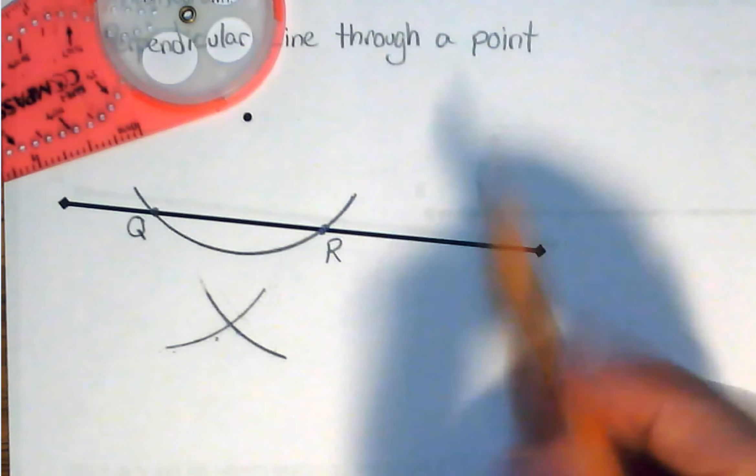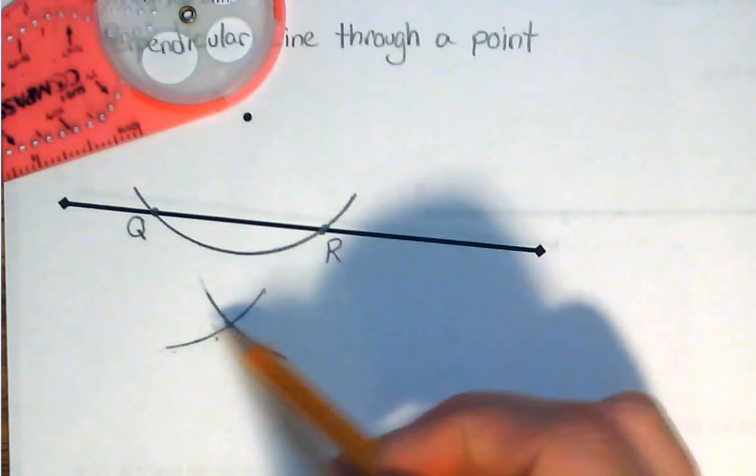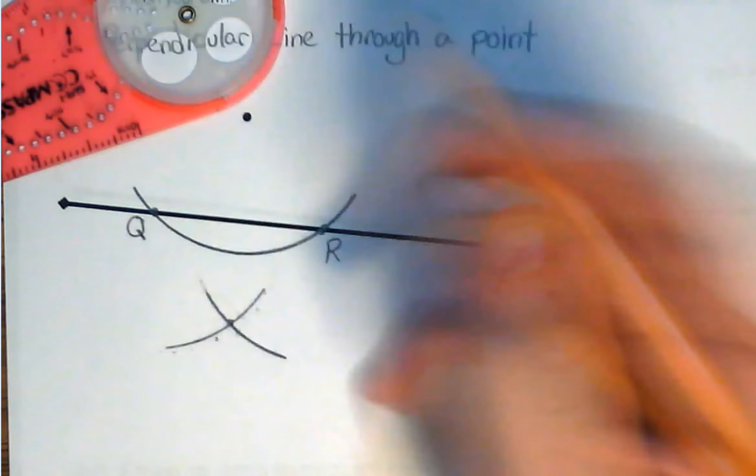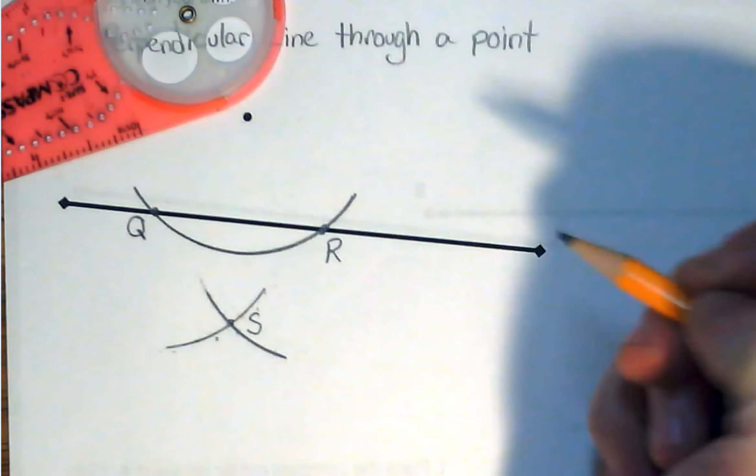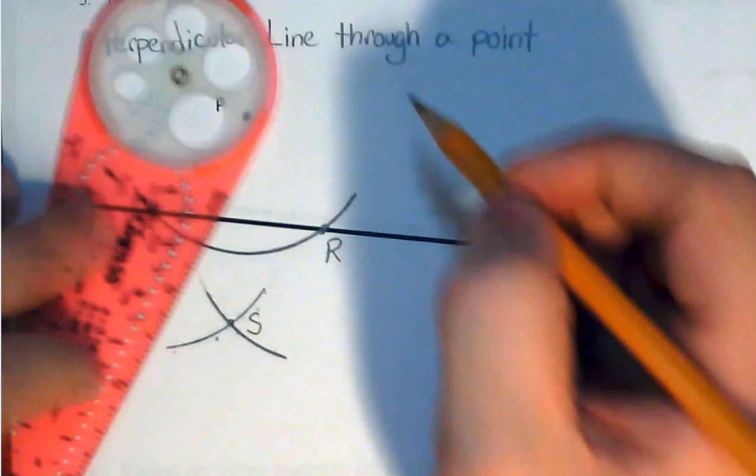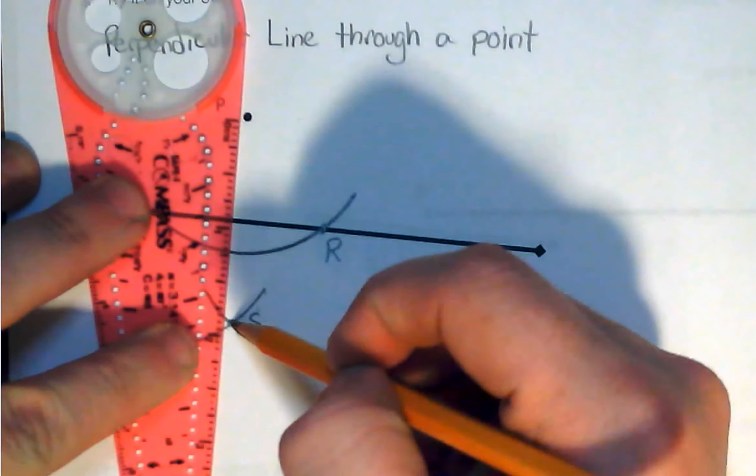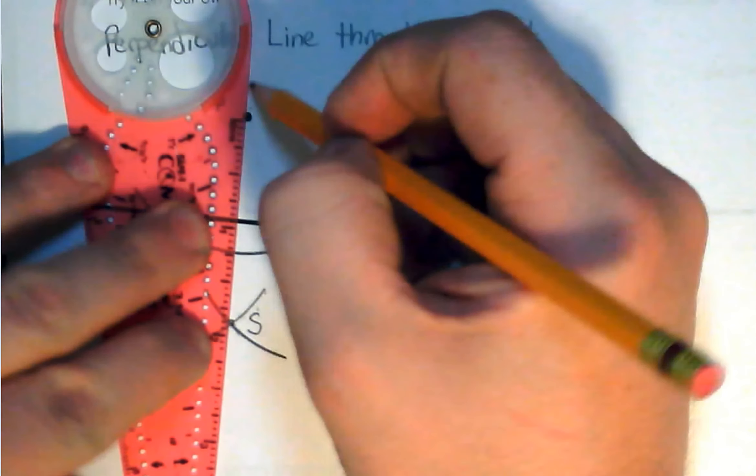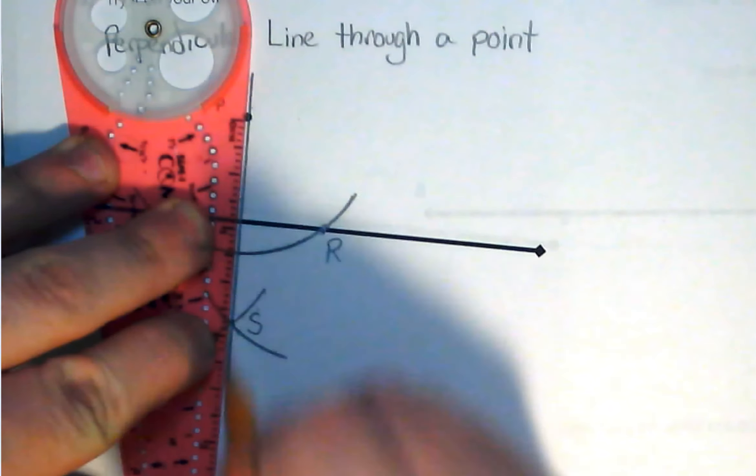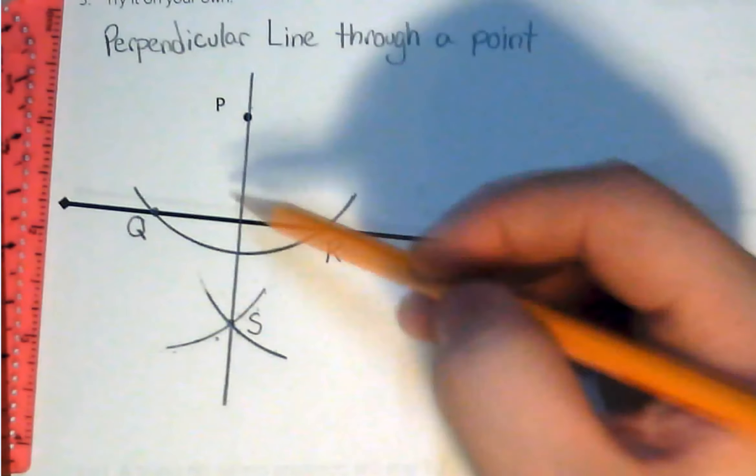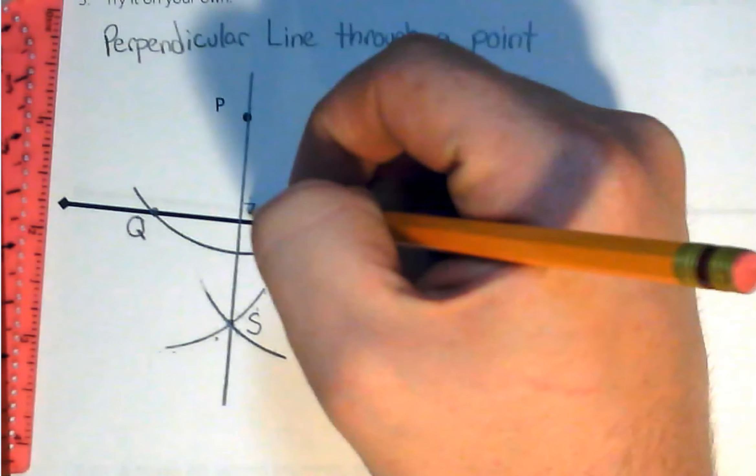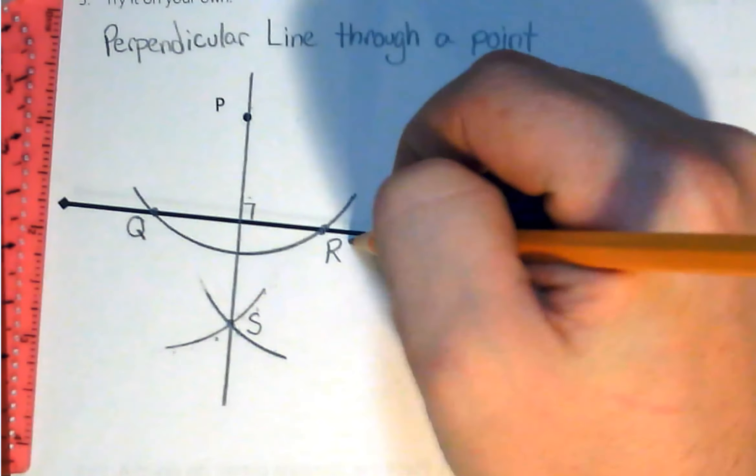So now I have two arcs that intersect below my line. And at the point of intersection, which we can call S, we're going to draw a line that goes through it and point P. So if I draw that line, what's going to happen is this line that I drew should be perpendicular to this line that I started with.